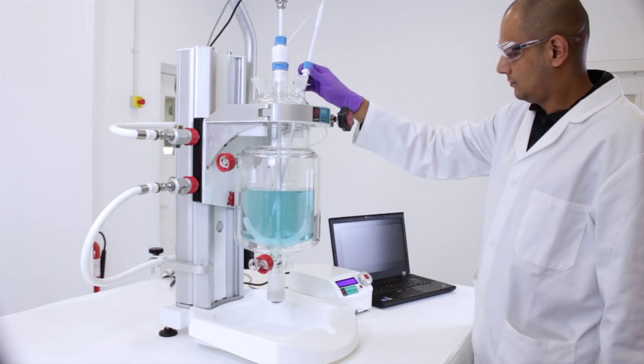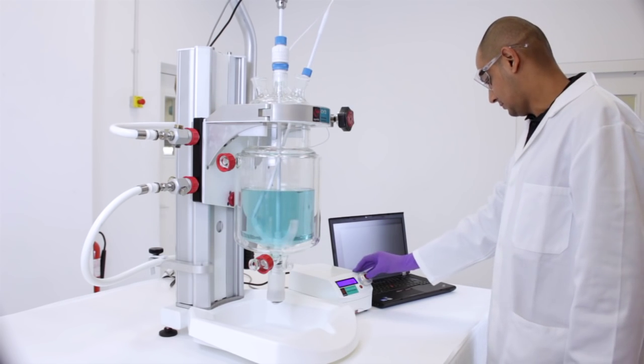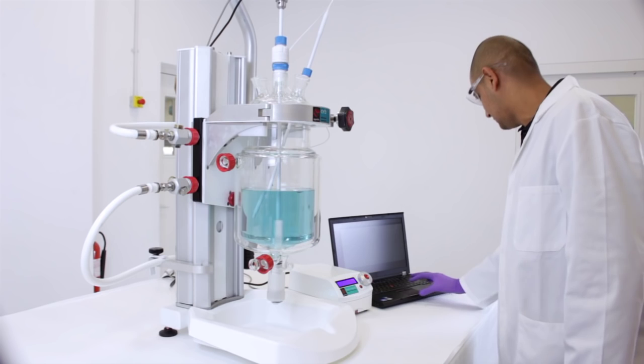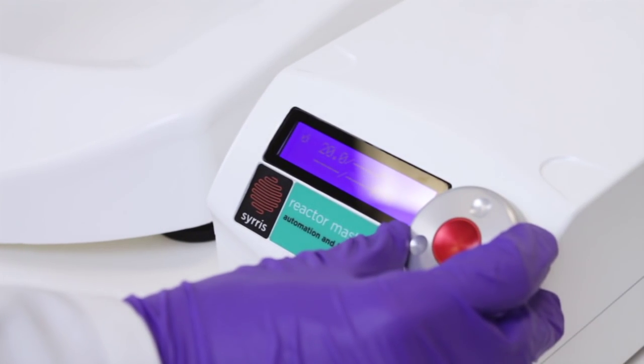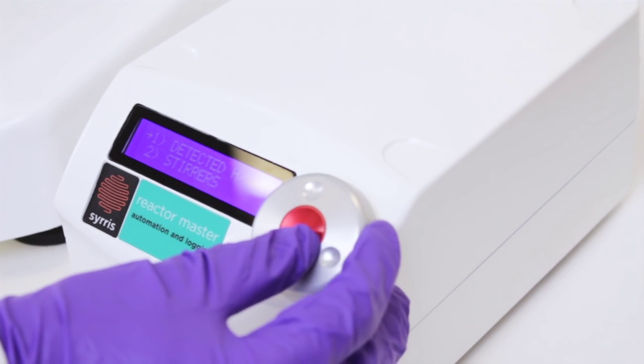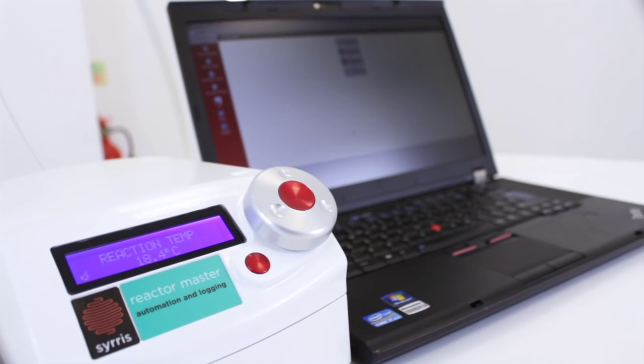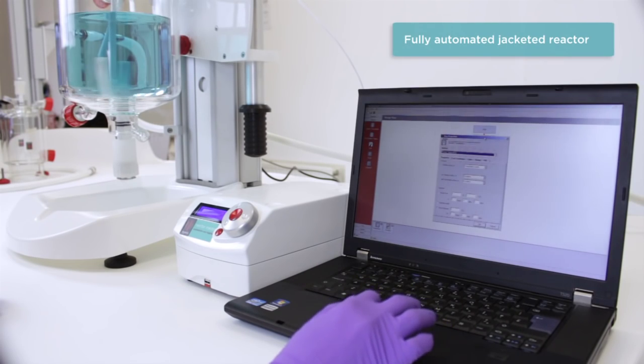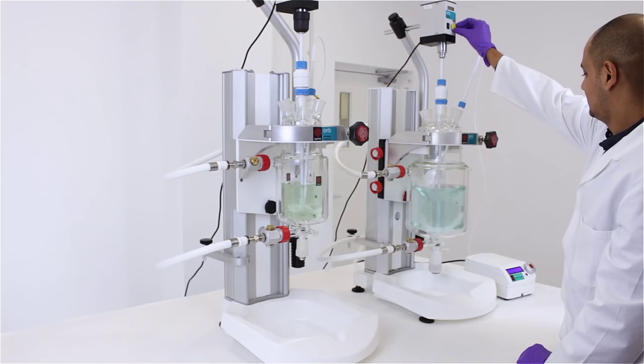For more sophisticated needs, Orb can be upgraded to allow automation. Add the Orb Reactor Master to automate, display and log temperature, stirrer speed, additions, pH and more, without a PC. Or add the PC software to convert Orb to a fully controlled laboratory reactor.